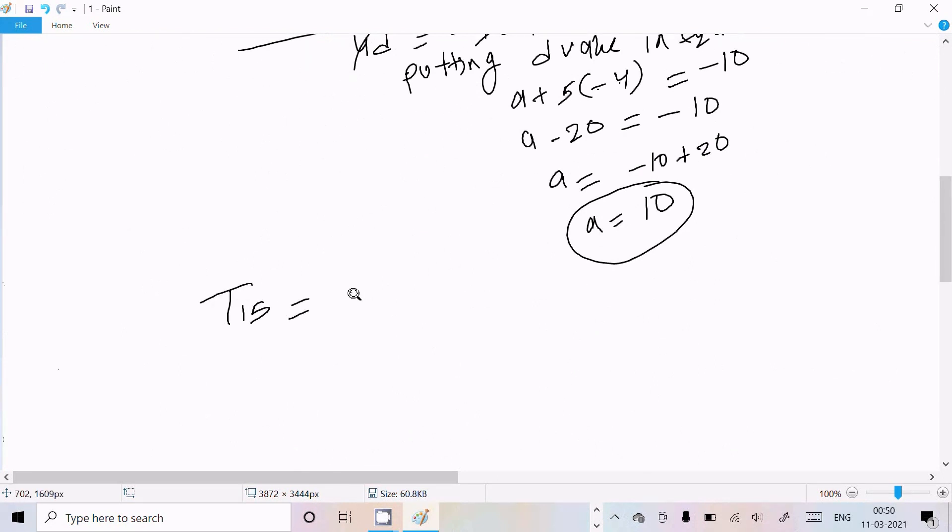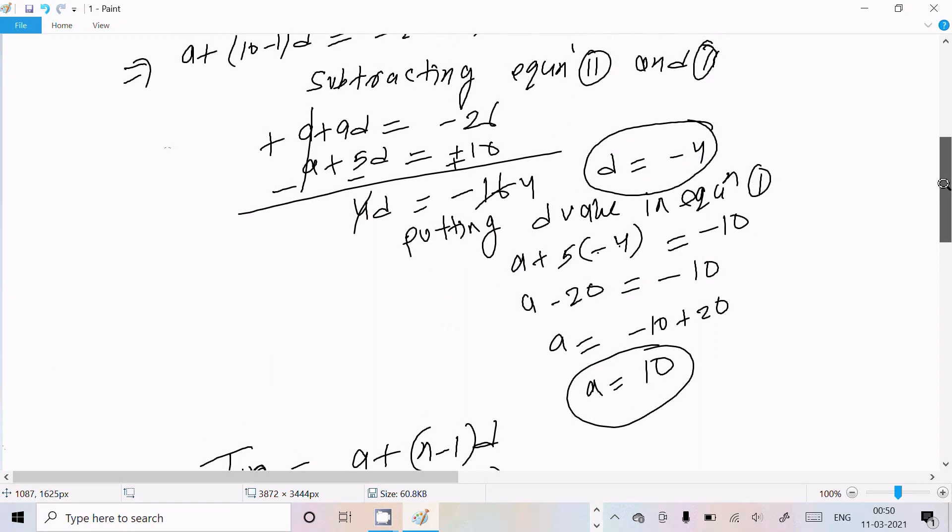So here T₁₅ = A + (n-1) × D. So this is Tₙ, now n is 15. So A that I calculated is 10, plus n is now 15 - 1, and D is the difference that I found out, -4.